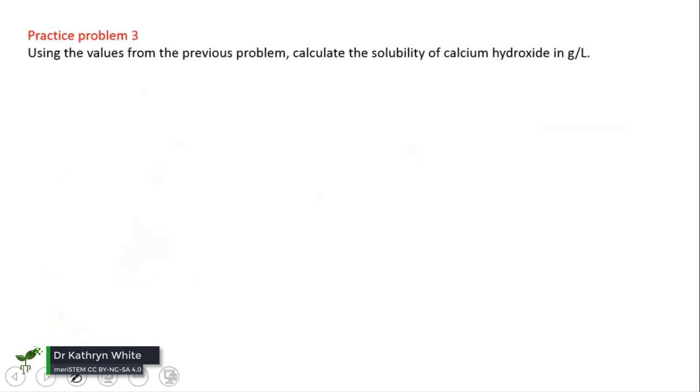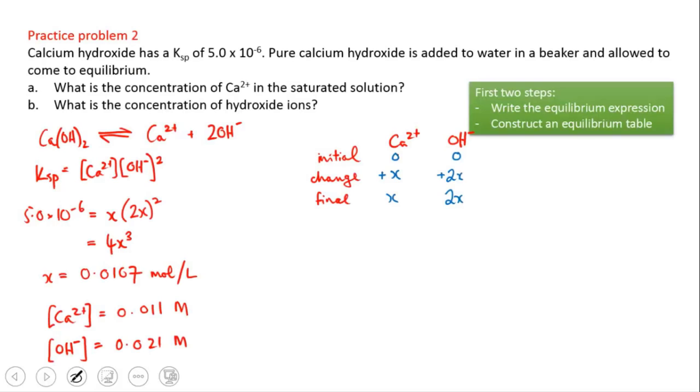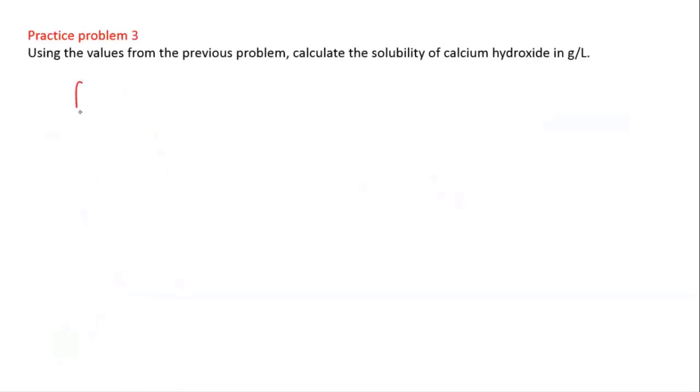Okay, now let's calculate the solubility of calcium hydroxide in grams per liter. So we know how many moles per liter dissolve and we're going to turn this into grams per liter. Just flicking back to our results, the concentration of calcium ions at equilibrium was 0.011 molar.